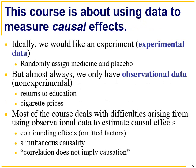This course is about using data to measure causal effects. Ideally, we would like an experiment — experimental data. We might randomly assign medicine or a vaccine to some people and a placebo to others and see how the vaccine or medicine treats a particular disease versus a placebo treatment. But almost always, we only have observational data — non-experimental data, such as returns to education or cigarette prices. Most of this course deals with the difficulties arising from using observational data rather than experimental data to estimate causal effects, such as confounding effects, omitted factors, or simultaneous causality. This is the old adage: correlation does not imply causation.